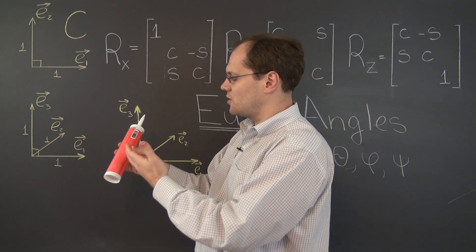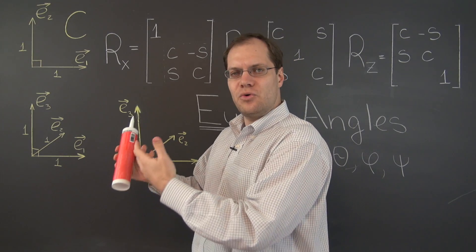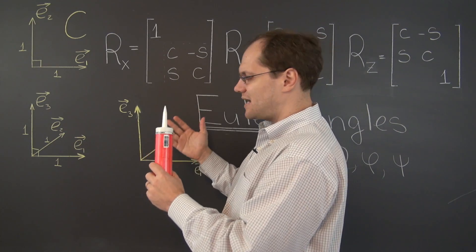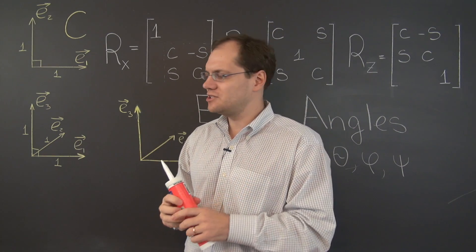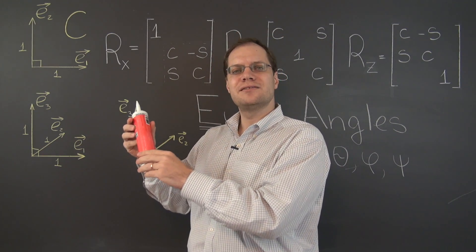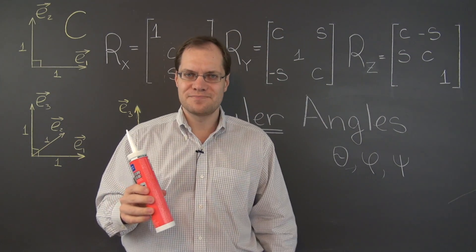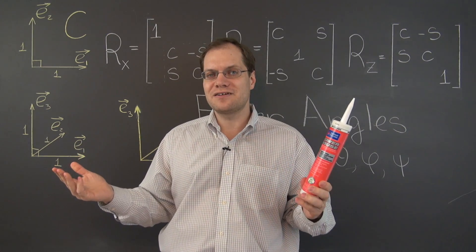So when we do things in this order, had we called that Euler angles, it would actually be a challenging task or a slightly more challenging task to express that rotation in terms of a matrix product of these three matrices. So that's the difficulty.